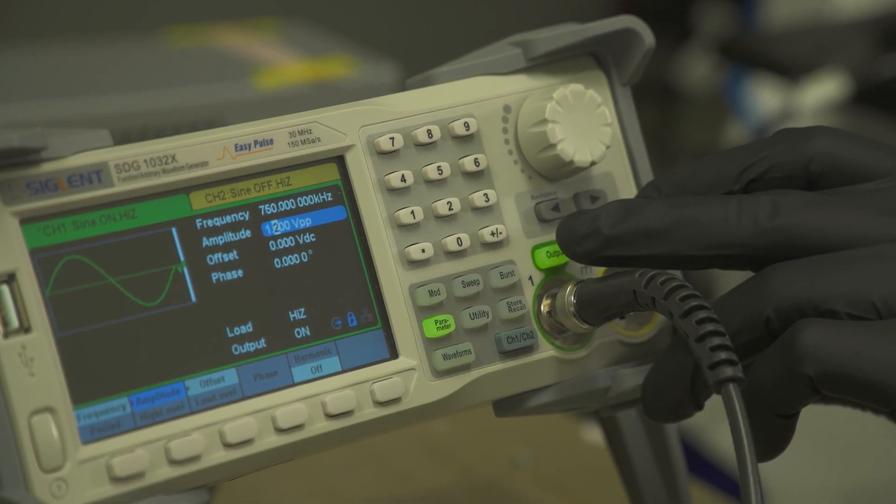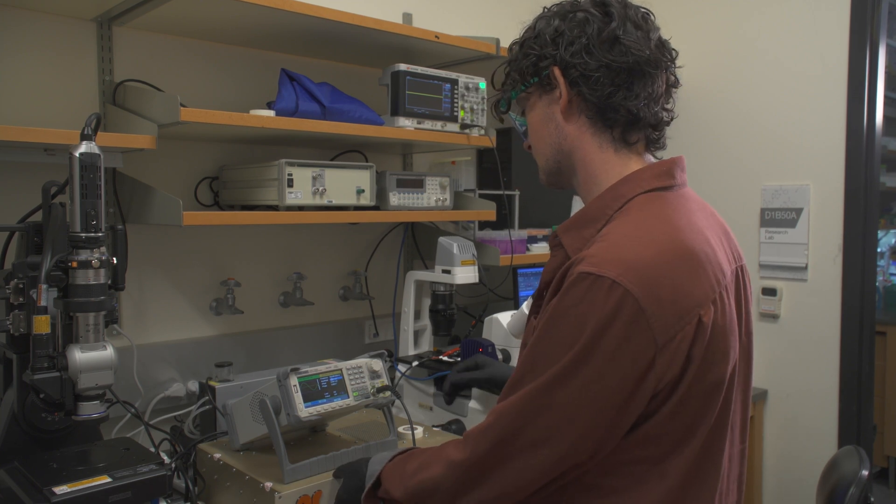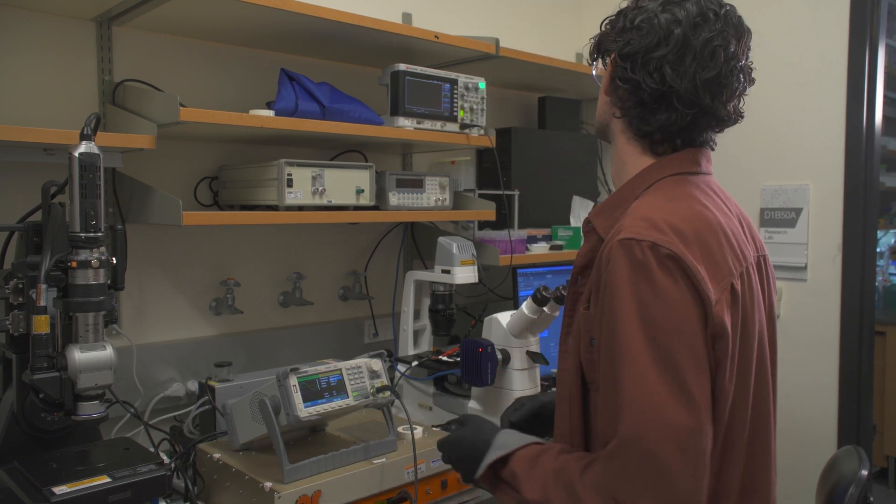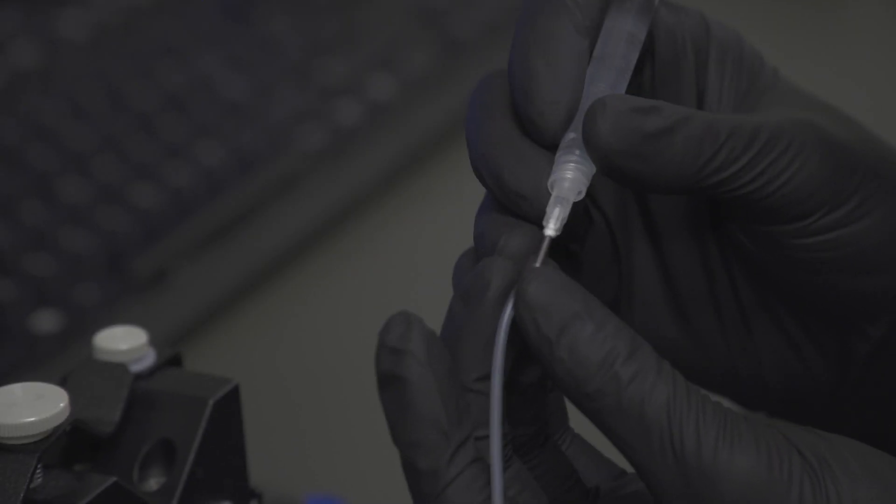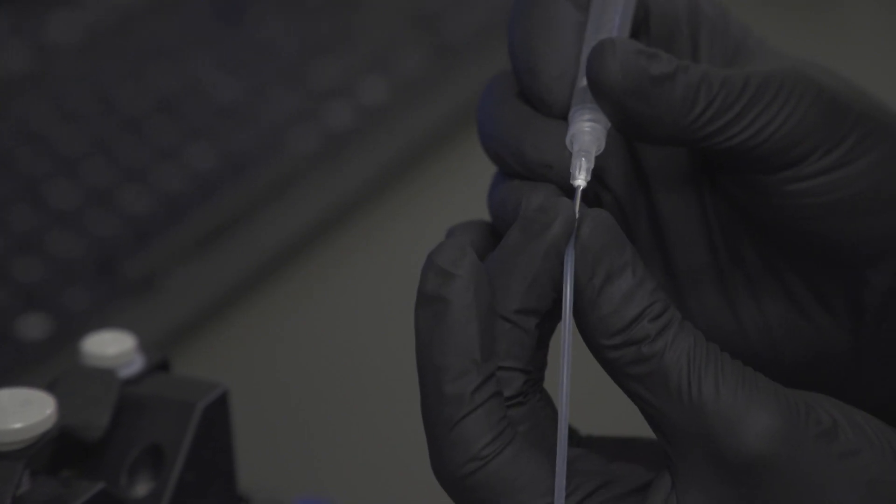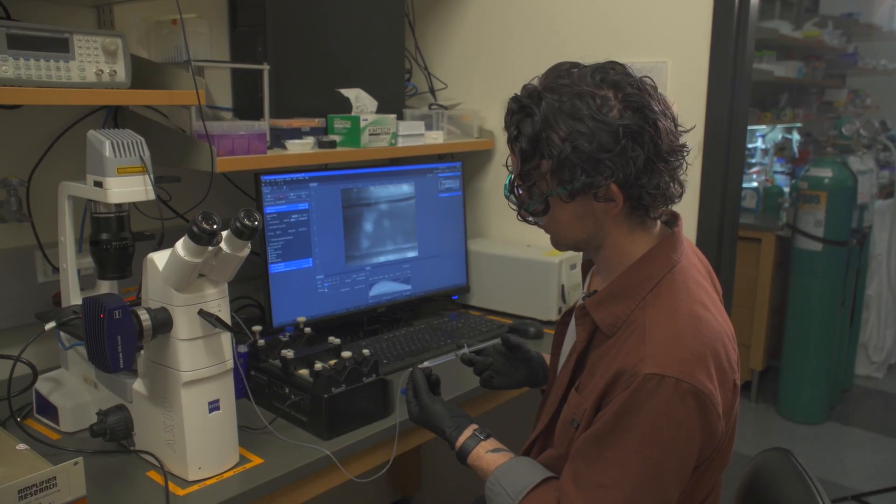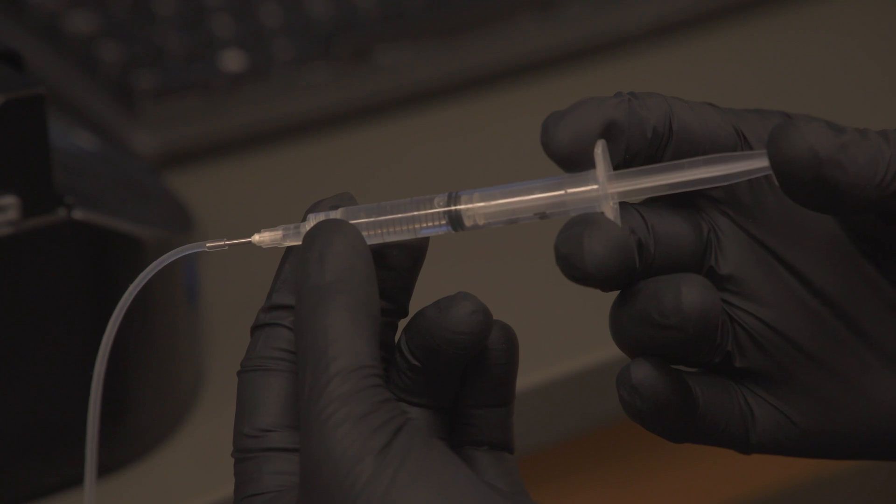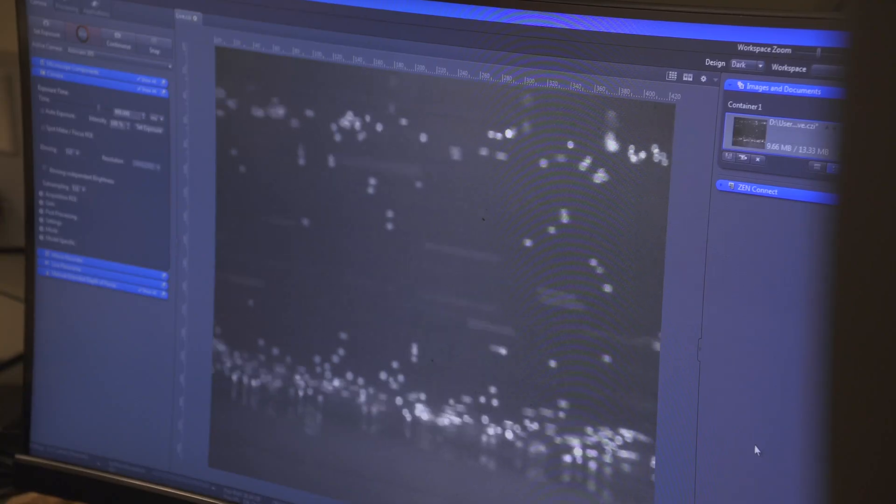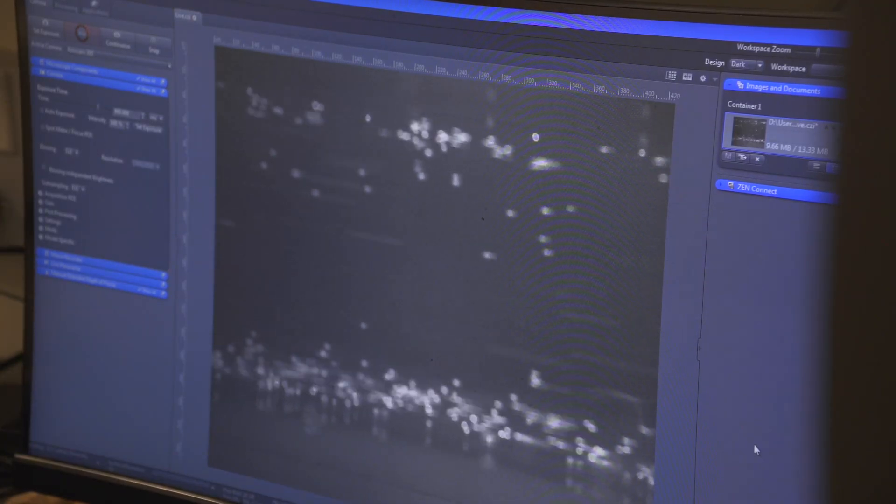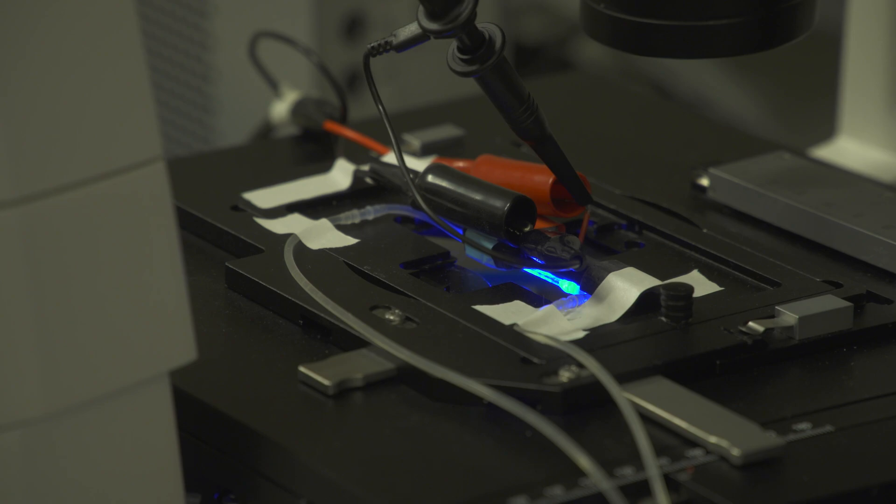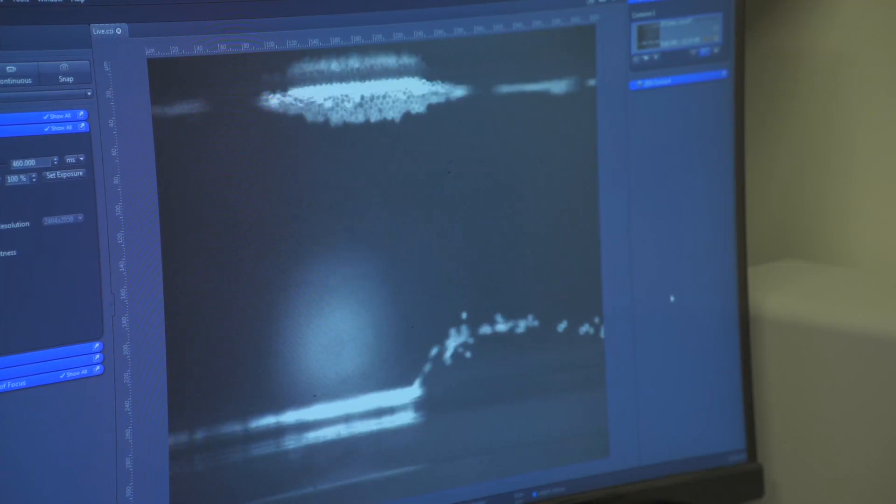Here we're using sound waves to manipulate particles to isolate them from blood samples. These sound waves that we're using in this device help to push those particles to the walls of what's known as a trapping channel. Those particles are trapped along the walls, but all of these excess blood components can just be ejected out of that channel.